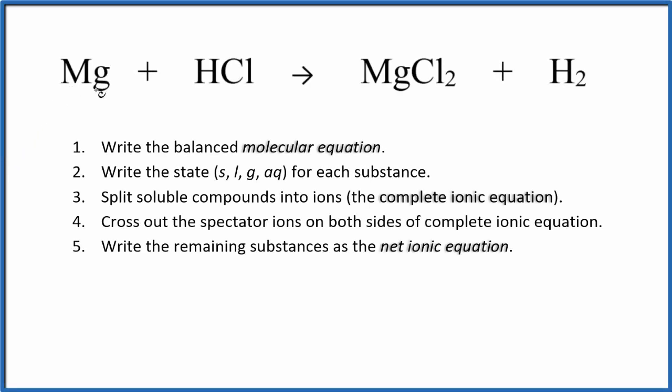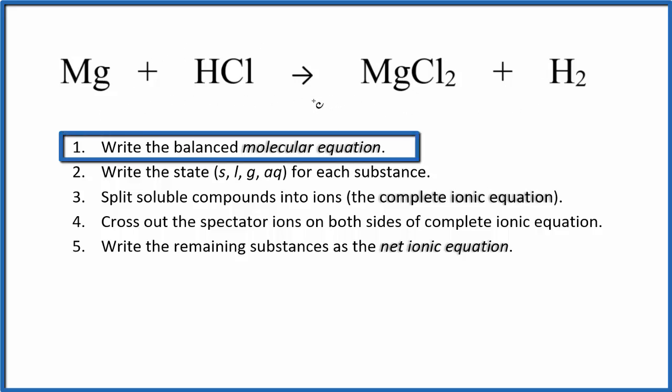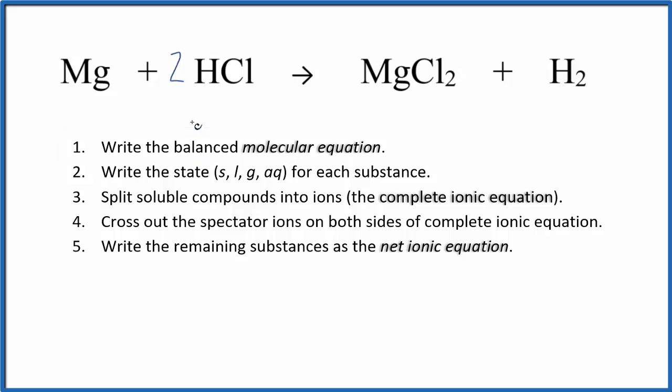To write the net ionic equation for Mg plus HCl, the first thing we need to do is balance the molecular equation. This is the molecular equation. It looks like we put a 2 here in front of the HCl and everything's the same on each side.